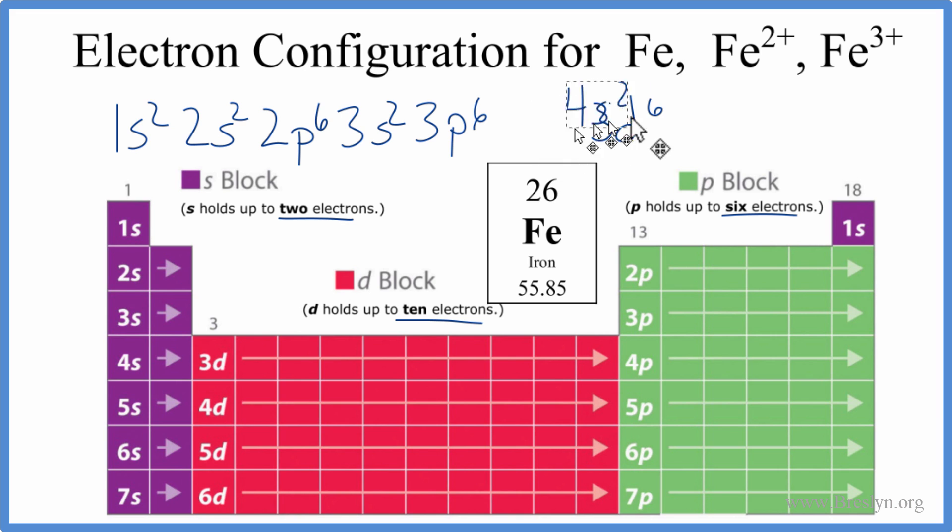Often you'll see the 4s after the 3d. As we get further into the periodic table, that makes sense because these 4s electrons are going to be lost to form ions first, so we put them last. Either way, these are the correct orbitals. It's just the order we're talking about.